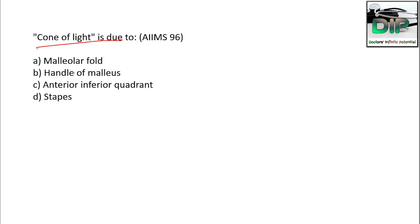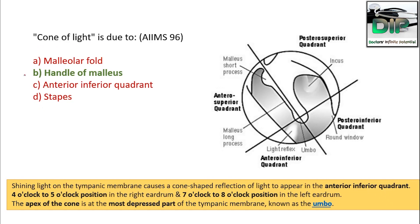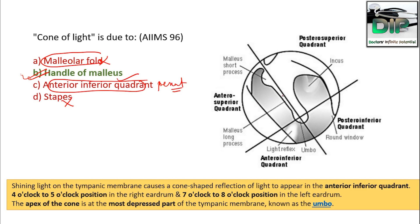The cone of light is due to — options: A) Malleolar fold, B) Handle of malleus, C) Anterior inferior quadrant, D) Stapes. The correct answer is handle of malleus. It is not due to the malleolar fold or stapes — it is due to the handle of malleus.